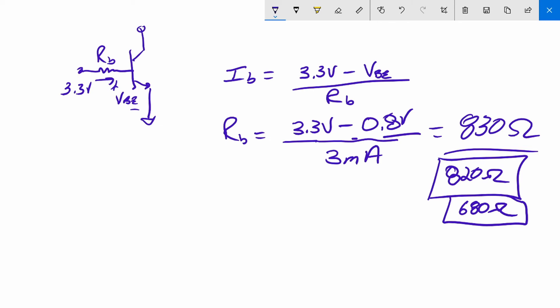Now, the next thing we want to look at is the collector current resistor R_C. We're going to assume this is in saturation and I'm going to assume a saturation voltage of 0.3 volts.